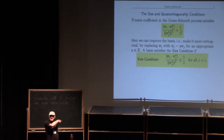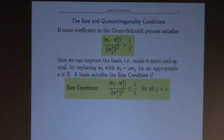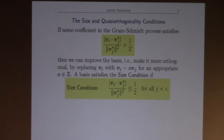The Gram-Schmidt process is very much iterative — it depends on the order you hand in the vectors. The first vector in the Gram-Schmidt basis is the first vector you give it. Suppose you randomize the vectors and give a different one first, then you get a different basis. So there's the possibility of moving the vectors around, permuting them, and trying to make things better that way.